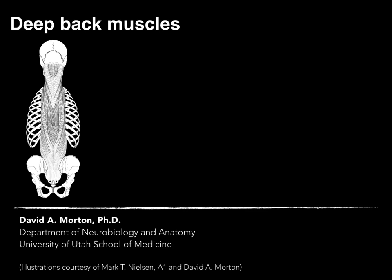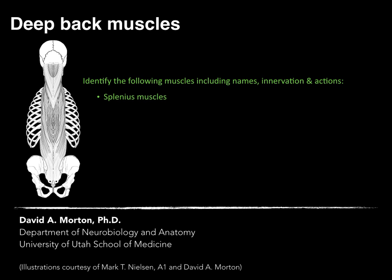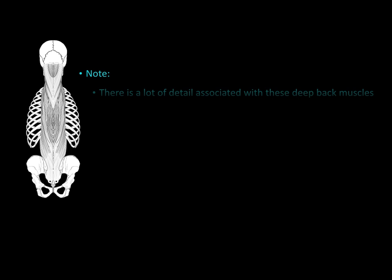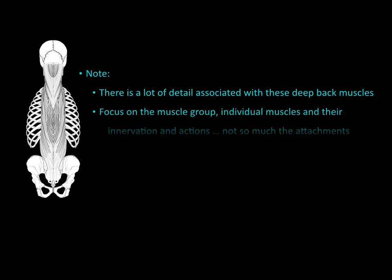Let's talk about deep back muscles. In this tutorial, we'll identify the following muscles, including names, innervations, and actions. We'll talk about the splenius muscles, the erector spinae muscles, the transversospinalis muscles, and a wee bit about those small suboccipital muscles. There's a lot of detail associated with these deep back muscles, but the focus is going to be on the muscle group, individual muscles, and their innervations and actions.